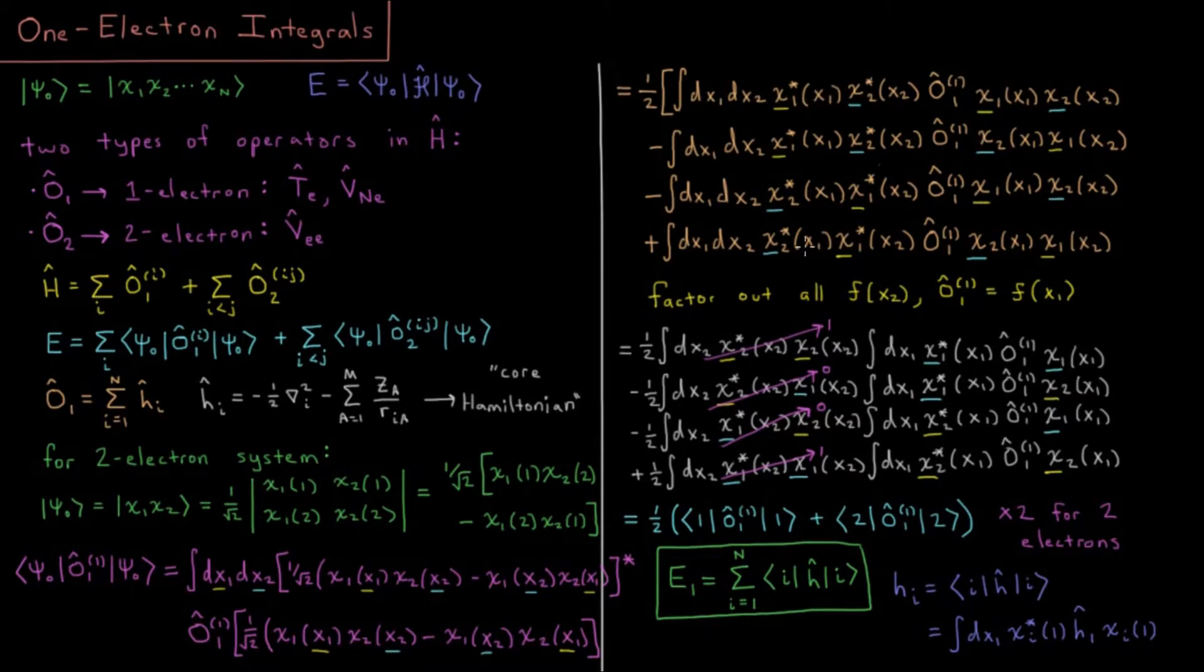We have the electron has some kinetic energy and it's attracted to the nuclei, and you add that up for all of the electrons. So for one-electron integrals, this gives us quite a nice result.